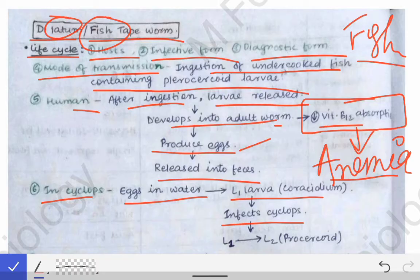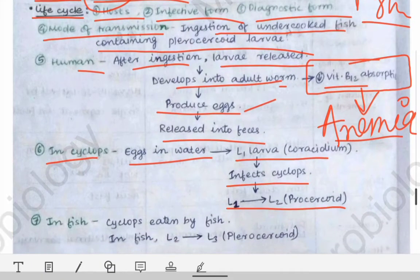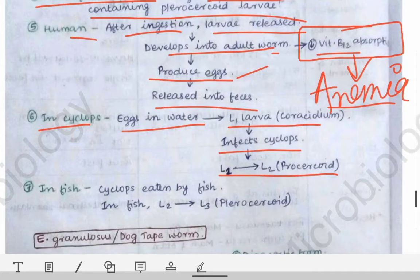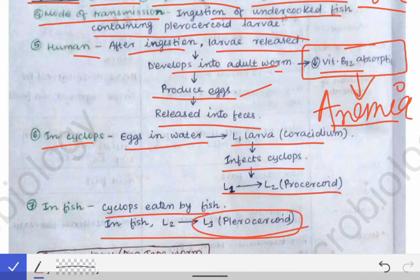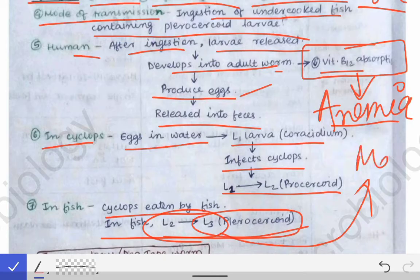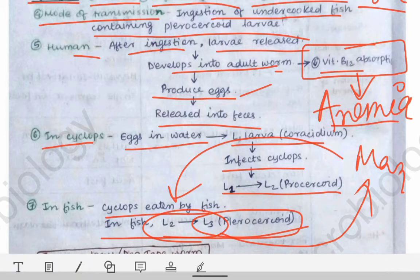The coracidium (L1 larva) is ingested by Cyclops. Inside Cyclops, the L1 larva is converted to the L2 larva. That L2 larva is then eaten by the fish, where it is converted to the L3 stage. When the undercooked fish containing L3 is eaten by man, the infection enters the human and the cycle continues. This completes the life cycle of Diphyllobothrium latum.